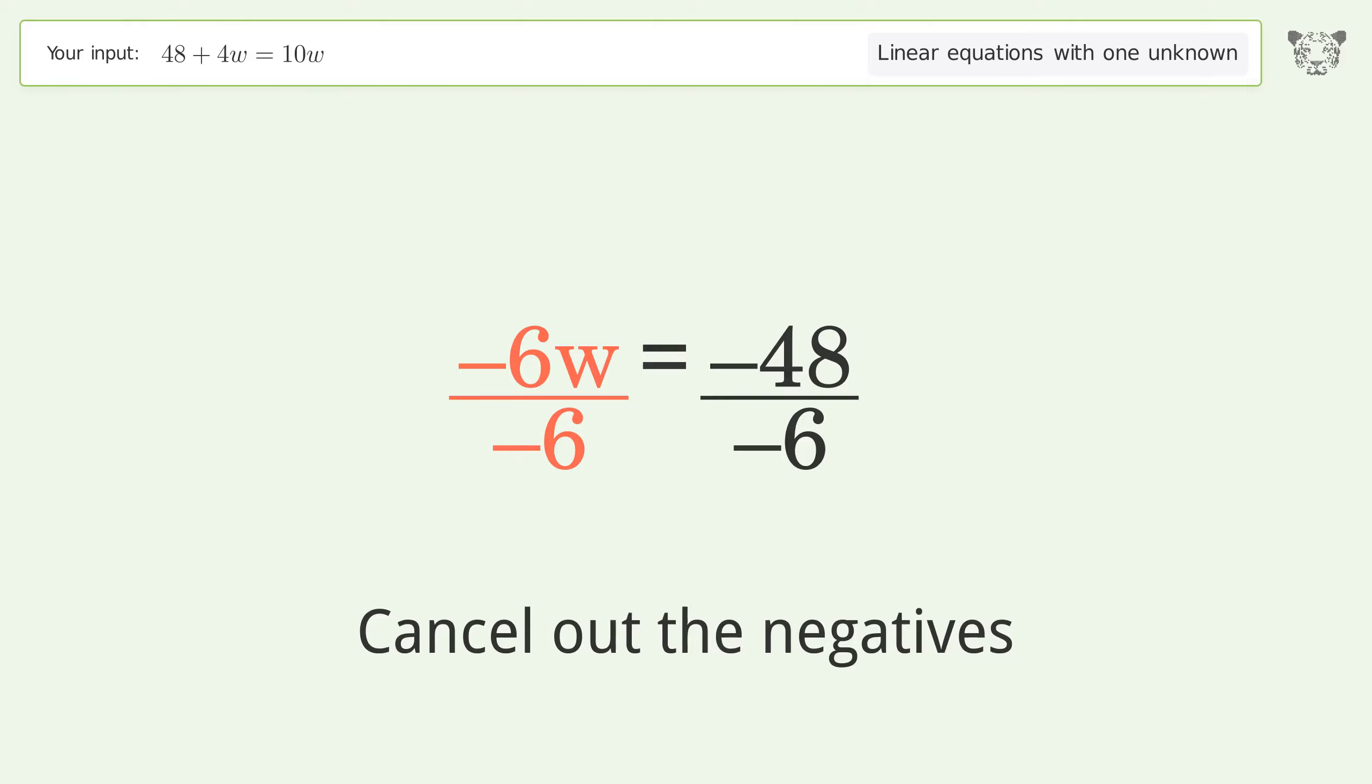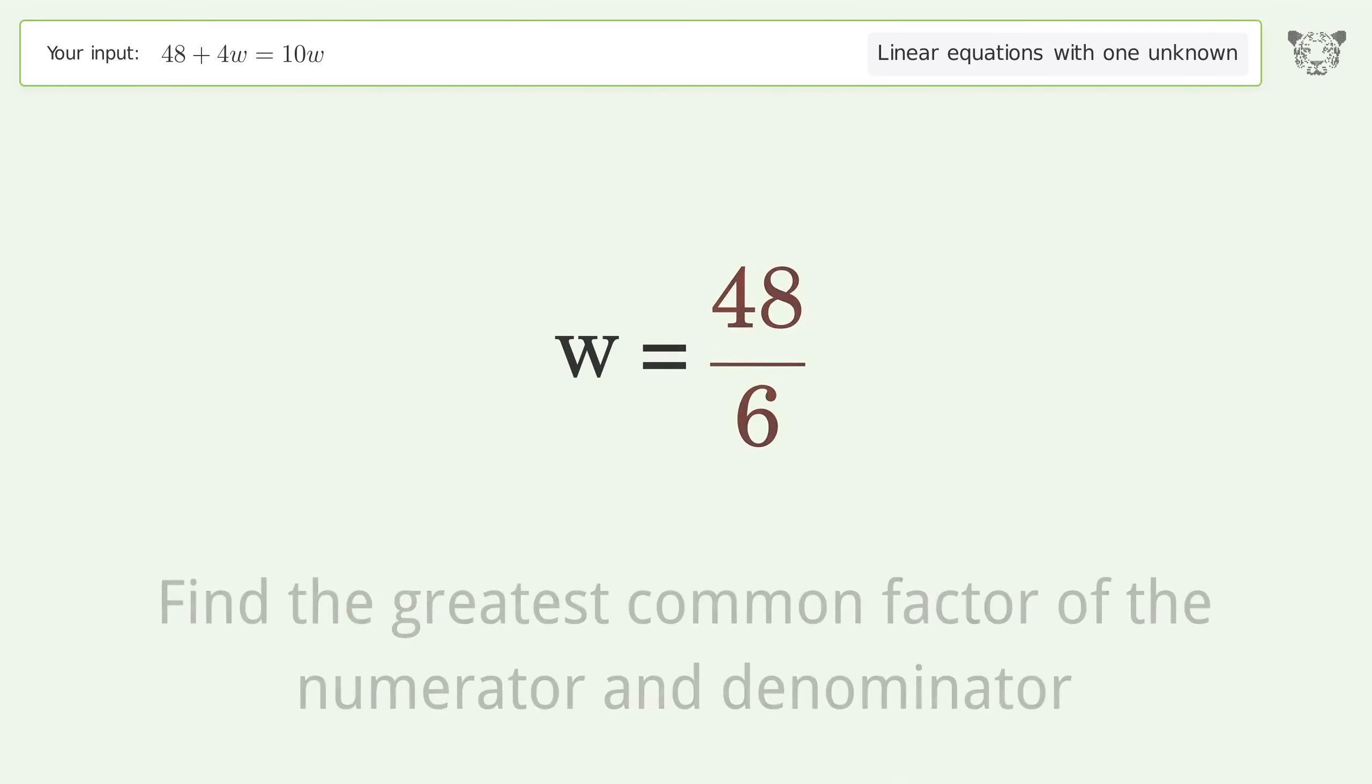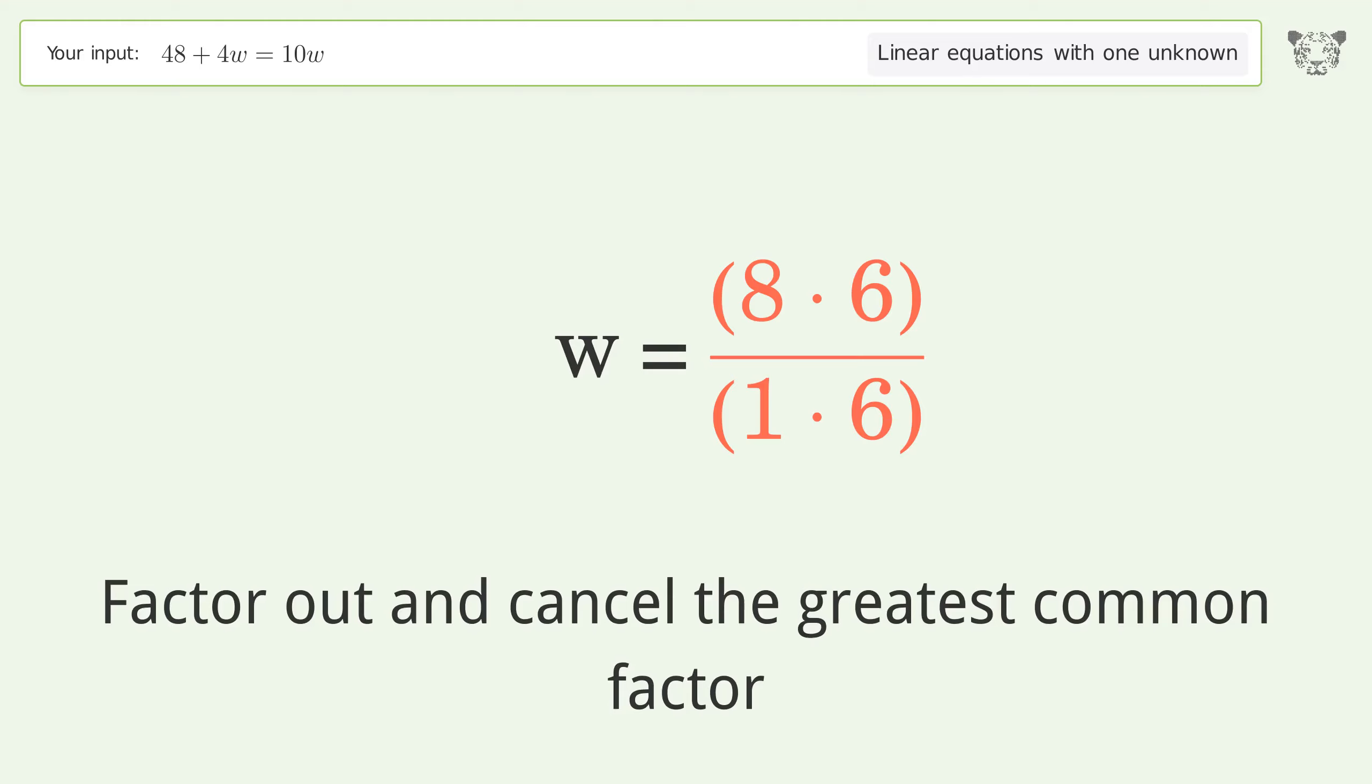Cancel out the negatives. Simplify the fraction. Cancel out the negatives. Find the greatest common factor of the numerator and denominator. Factor out and cancel the greatest common factor.